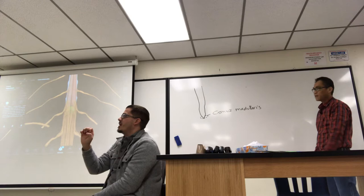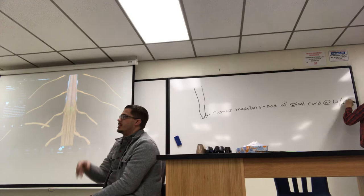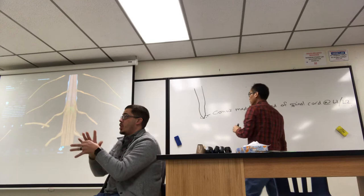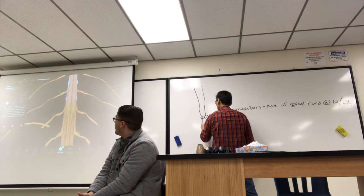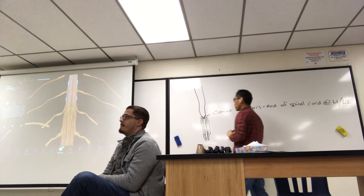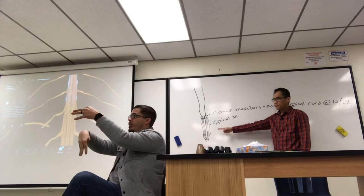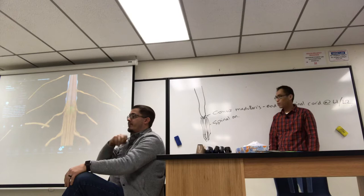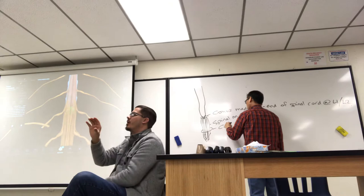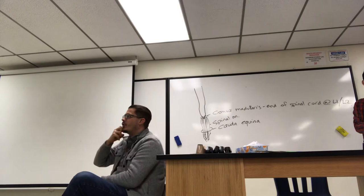The conus medullaris describes the shape of the end of the spinal cord at L1-L2. The spinal nerves that come off hang inferiorly below that level, and they resemble a horsetail. The structure is called the cauda equina, which means horsetail. They are spinal nerves — they just look like a horsetail, not hair.